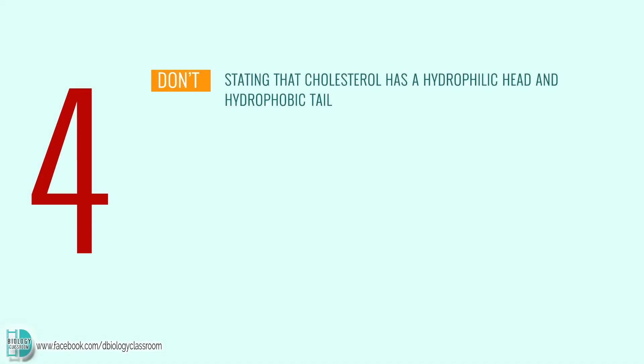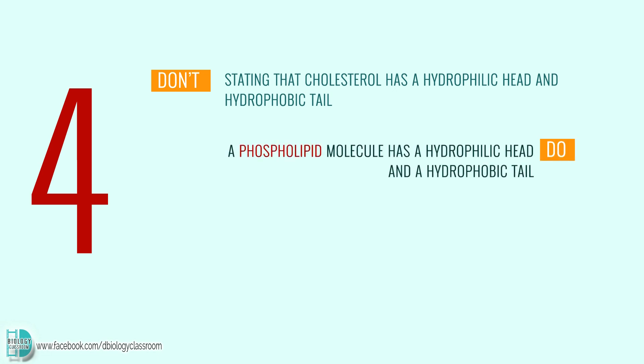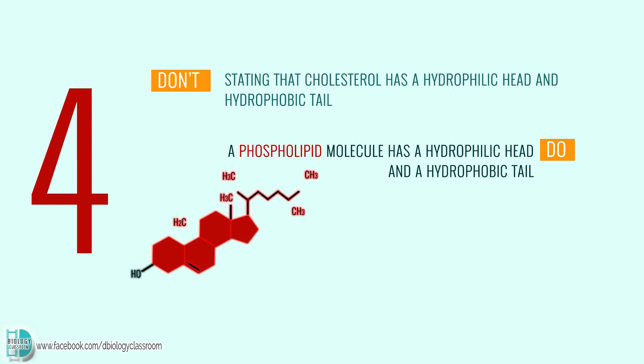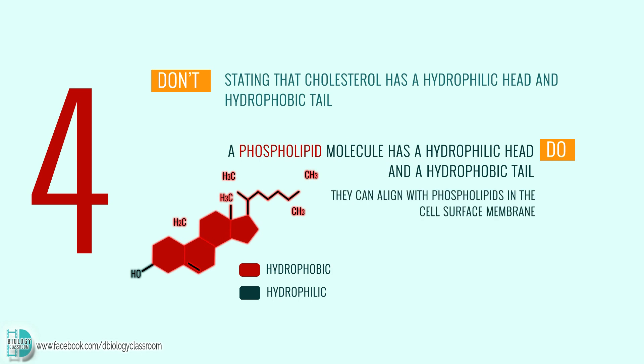Number 4: stating that cholesterol has a hydrophilic head and hydrophobic tail. A phospholipid molecule has a hydrophilic head and a hydrophobic tail. Cholesterol, on the other hand, like phospholipids, has both hydrophilic and hydrophobic regions. That is what enables them to align with phospholipids in the cell's surface membrane, but we do not call those regions head and tail.